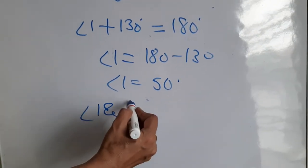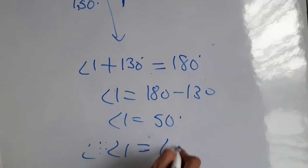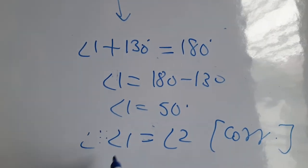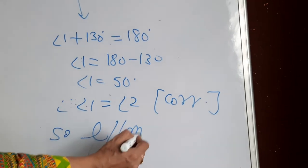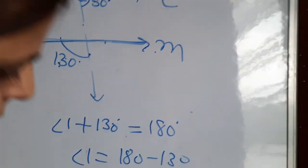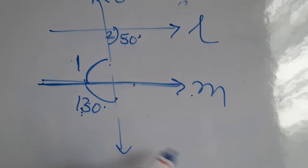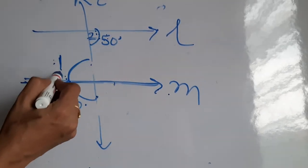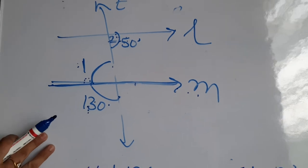We can give a third method also. By linear pair, angle 1 plus 130 equals 180, so angle 1 equals 50 degrees. Now if alternate interior angles are equal — angle 1 equals 50 and the other angle is also 50 — then alternate interior angles are equal, so lines are parallel. The same problem can be solved by three methods; you may choose whichever feels suitable.